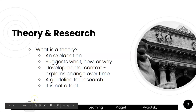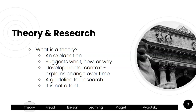So what's a theory? A theory is an explanation that a scientist has formulated based on their observation and reading, and hopefully not just their belief, but an explanation. It does suggest the what, how, or why of certain phenomena in a developmental context. It looks specifically at how we change over time.